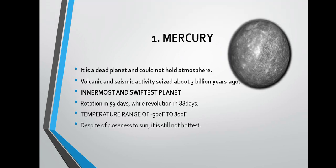Mercury is the first planet. Mercury is a dead planet and cannot hold an atmosphere. Its rotation takes 59 days and its revolution takes 88 days. The most important thing to remember is that Mercury is the smallest planet of all — it is the innermost and swiftest planet.